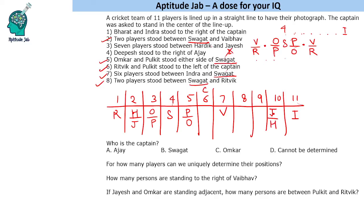We are left with three people: Bharat, Deepesh, and Ajay, one of whom is the captain. Bharat stood to the right of the captain, so Bharat cannot be the captain. Deepesh stood to the right of Ajay, so Deepesh cannot be the captain either. That means Ajay is the captain. Deepesh and Bharat are both to the right, so they can be interchangeably placed in those positions.